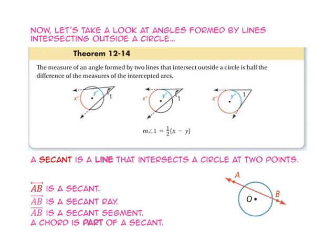Now let's take a look at angles formed by lines intersecting outside a circle. Theorem 12-14 states that the measure of an angle formed by two lines that intersect outside a circle is half the difference of the measures of the intercepted arcs. In the first diagram, we have two secants that intersect outside the circle, so the measure of angle 1 will be x degrees minus y degrees divided by 2. In the second diagram, we have a tangent that intersects a secant outside the circle, so the measure of angle 1 will be x degrees minus y degrees divided by 2. In the third diagram, we have two tangents that intersect outside the circle, so the measure of angle 1 will be x degrees minus y degrees divided by 2.